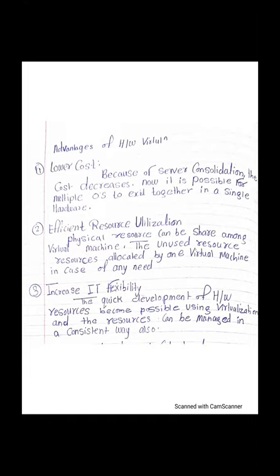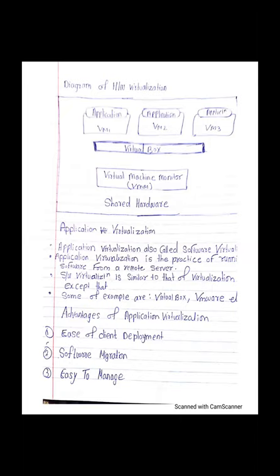Then, increased flexibility: the dynamic deployment of hardware resources becomes possible using virtualization, and resources can be managed in a consistent way. In this diagram you can see different applications running on different virtual machines. Using Virtual Box or VMware Workstation, we can install multiple operating systems, and there is also a virtual machine monitor shown.